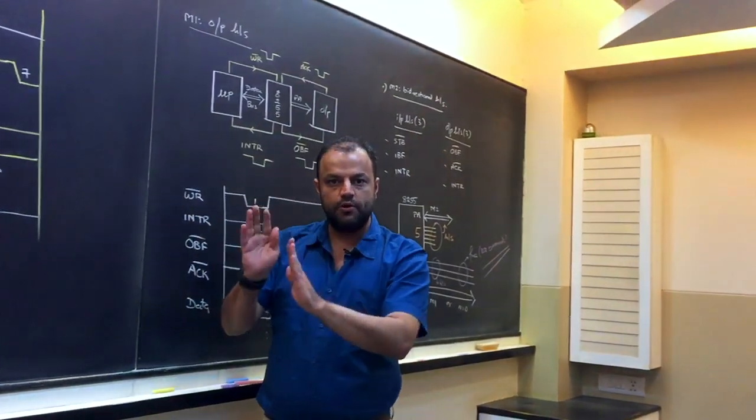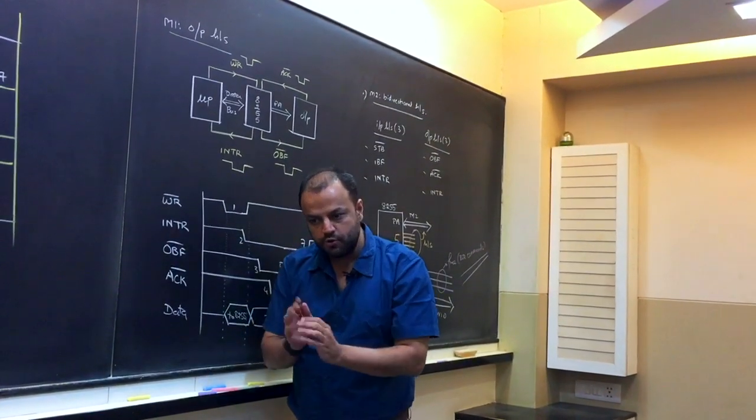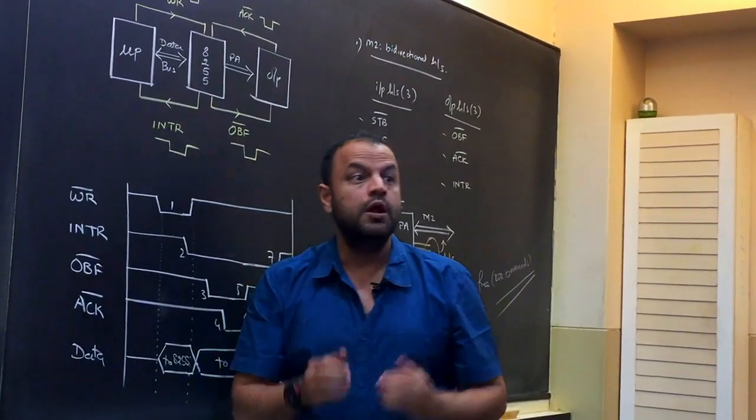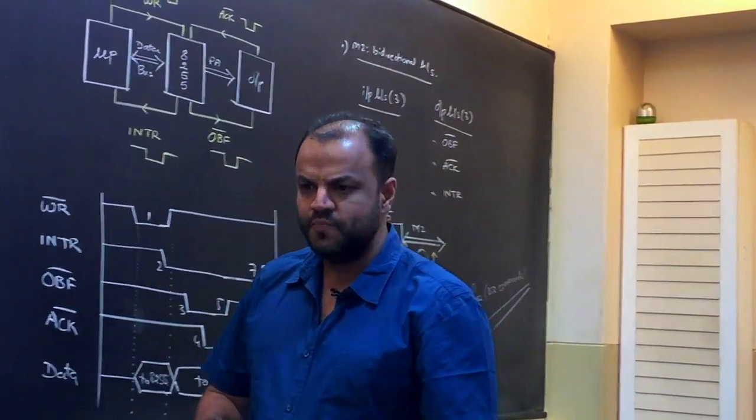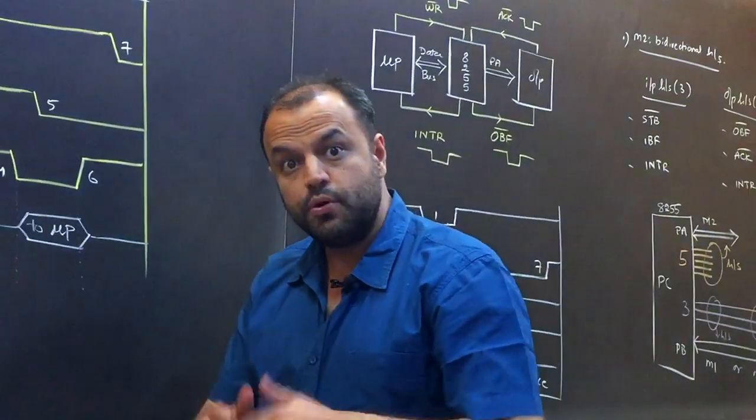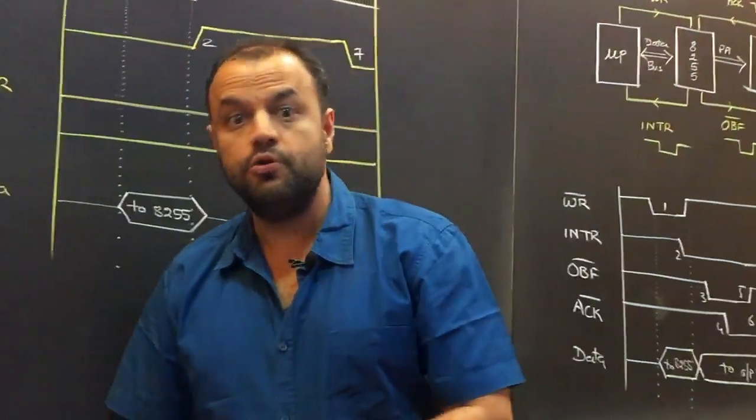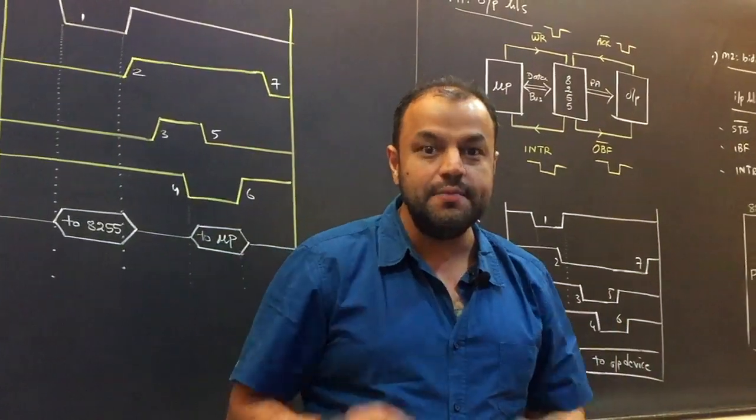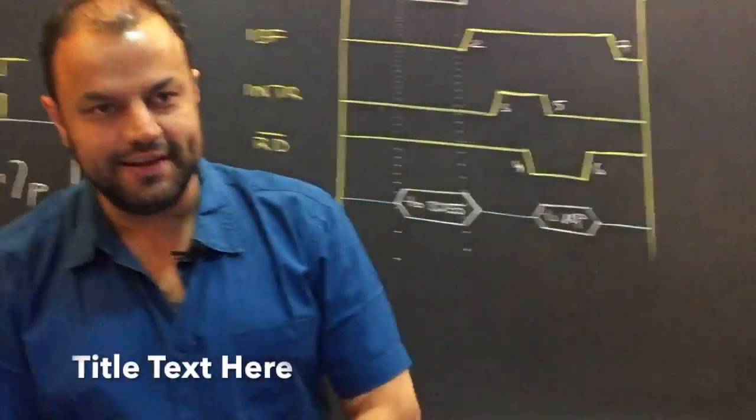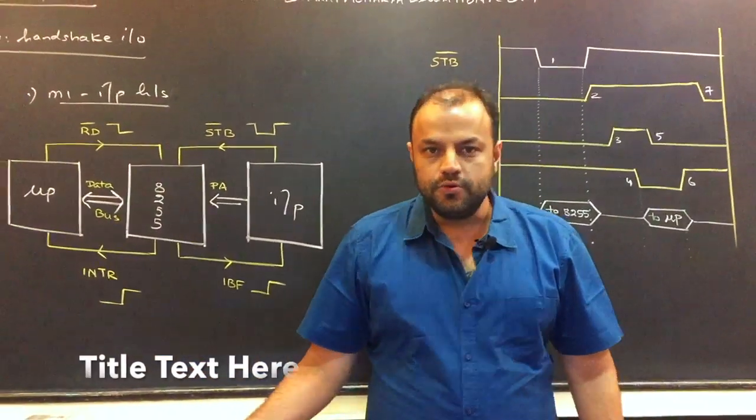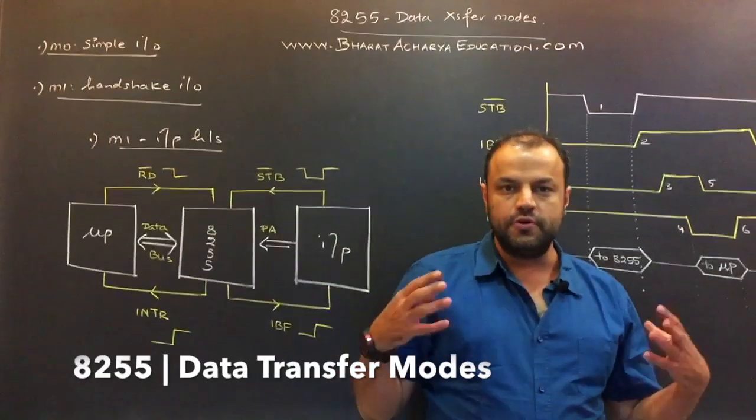I'll be configuring it as an output port and using mode 1 so that I have only output support. But suppose if I'm making a port for a pen drive as an example, or a touch screen, I know it is input also and output also. Then I can't use mode 1. Then I'll be using mode 2, where anytime it can do input handshaking as well as output handshaking. So I'll be teaching you all of these in detail.